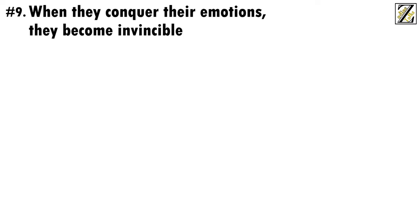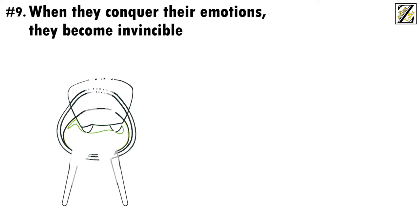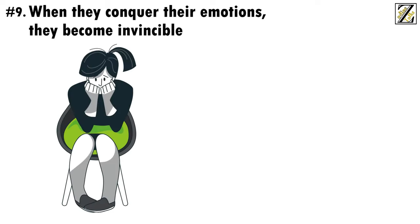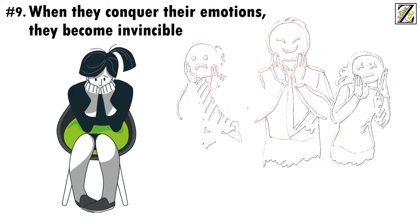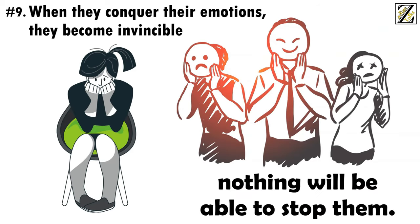Number 9. When they conquer their emotions, they become invincible. Cancers tend to be ruled by emotions, and as such, they can be overwhelming when things get too bad. However, if a Cancer individual manages to keep their emotions in check and doesn't allow themselves to be manipulated by them, nothing will be able to stop them.